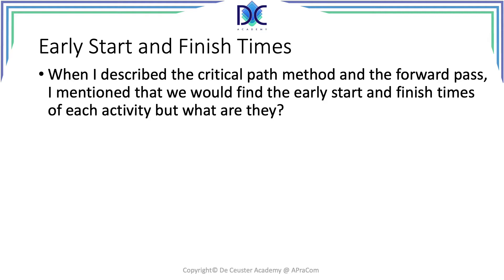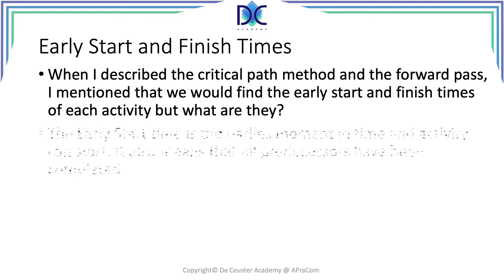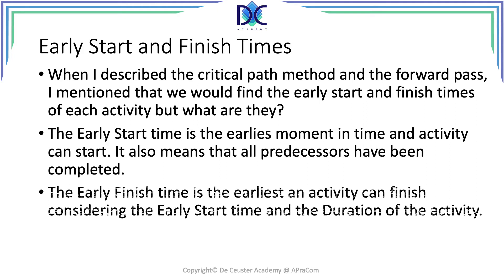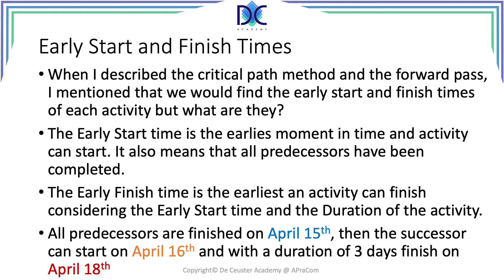During the forward pass we look at activities at their earliest start date, so we find for every activity the earliest end date as well. The early start is the earliest moment in time an activity can start, which means all the predecessors have been completed before, because the predecessor relation says the successor activity can only start when all predecessors have been completed. The early finish time is the earliest an activity can finish when we consider the early start and the duration.